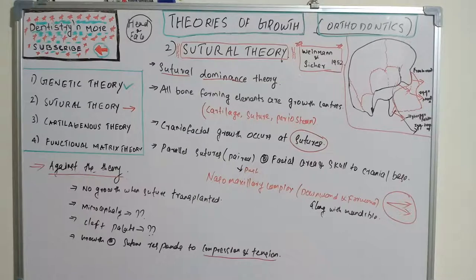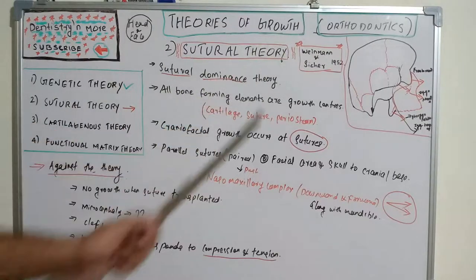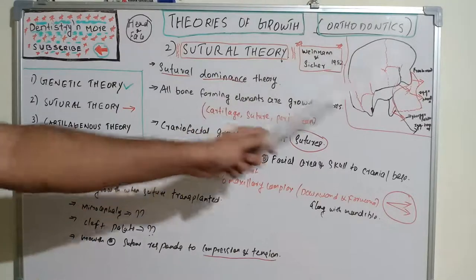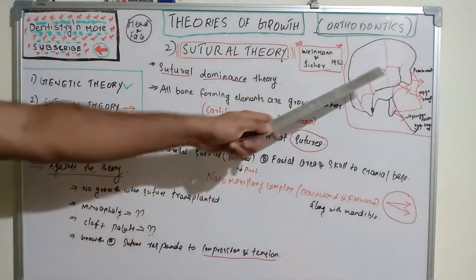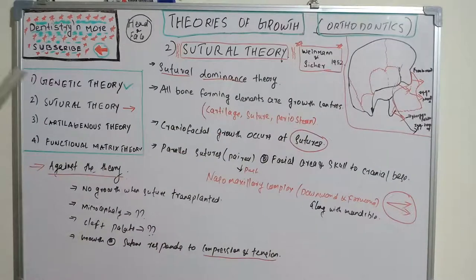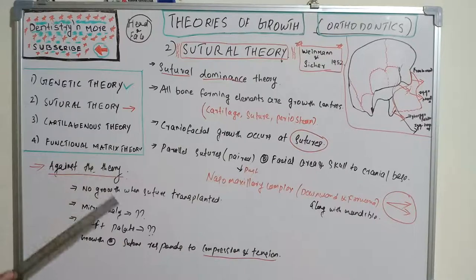That's all about sutural theory — also known as sutural dominance theory, given by Weinmann and Sicher in 1952. The nasomaxillary complex with paired sutures is pushed forward and downward. The theory is not accepted because it could not explain microcephaly, hydrocephaly, or cleft palate conditions, and when sutures were transplanted, no growth occurred. Next we'll move on to cartilaginous theory.